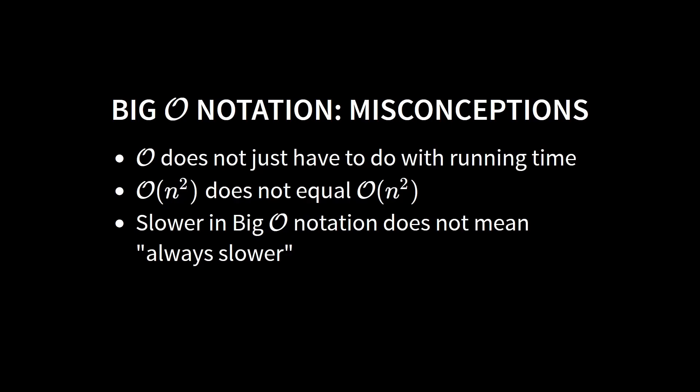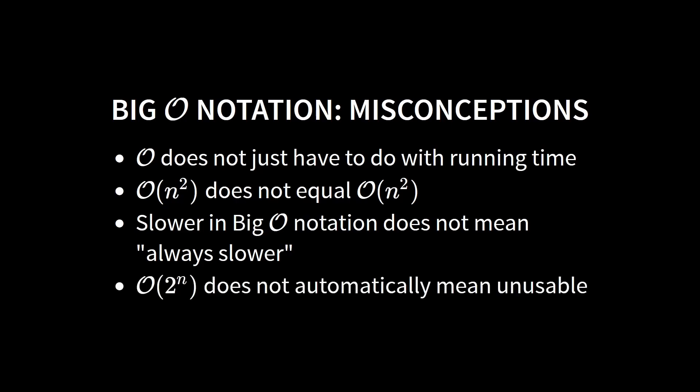This is especially true for time complexities that differ only slightly, such as linear and superlinear running time. And finally, just because an algorithm has a very poor running time in the worst case — say exponential — this does not mean that it is completely unusable. First, it may well be fast enough for small inputs. Second, we're talking about the worst case running time, and perhaps the worst case does not occur at all in practice, so the algorithm is very fast in the vast majority of cases. Many problems, for example optimization problems, cannot be solved faster than exponential running time in theory, but in practice there are algorithms that solve such problems quickly since the worst case practically never happens.